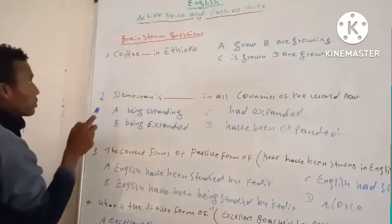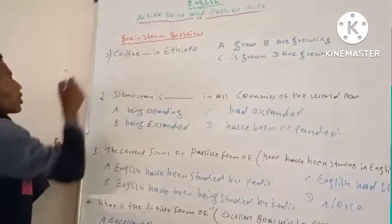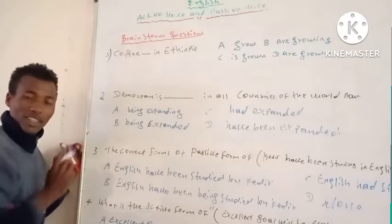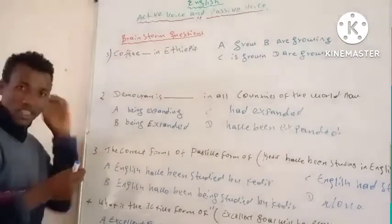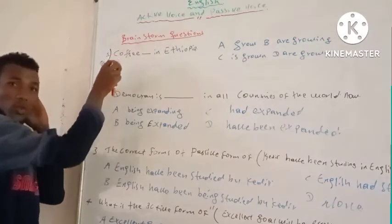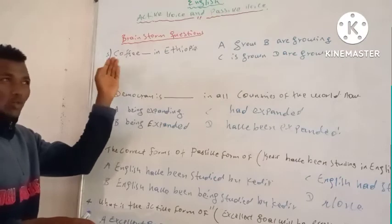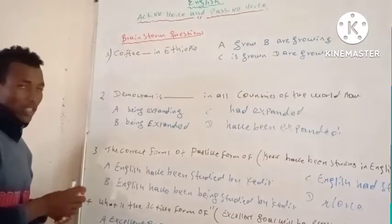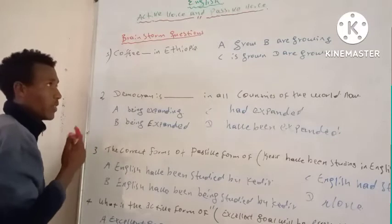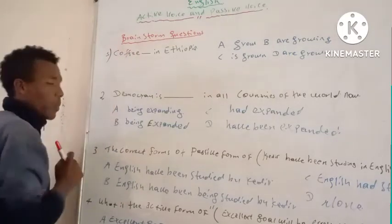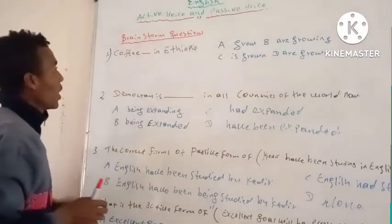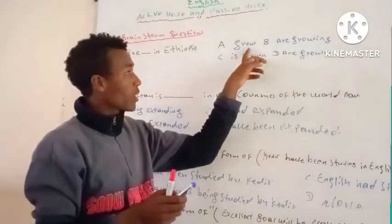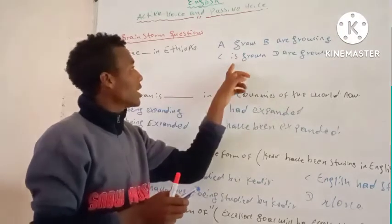The first question is taken from the national examination — from 1992 and also from grade 12 exercise books. The question is: 'Coffee blank in Ethiopia.' The options are: A) grow, B) are growing, C) is grown, D) are grown. What is the correct answer?